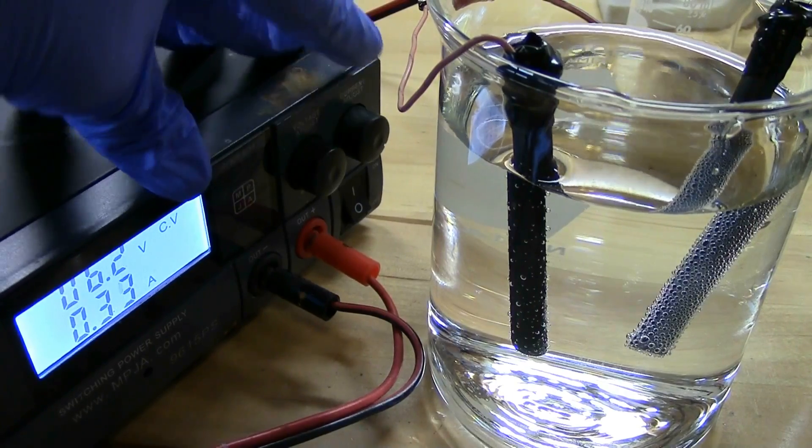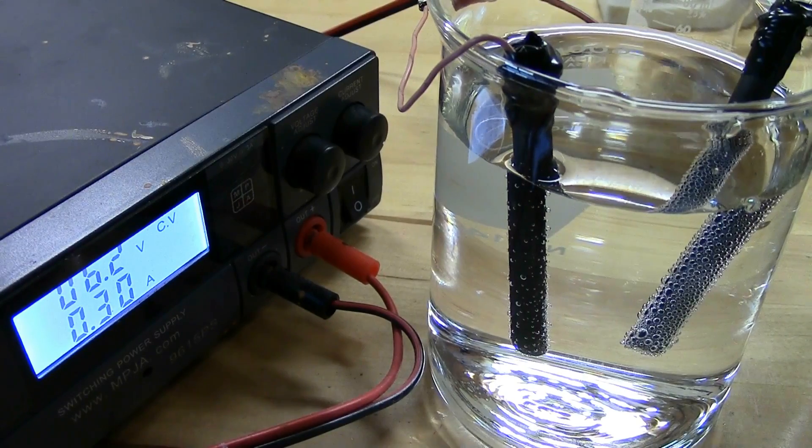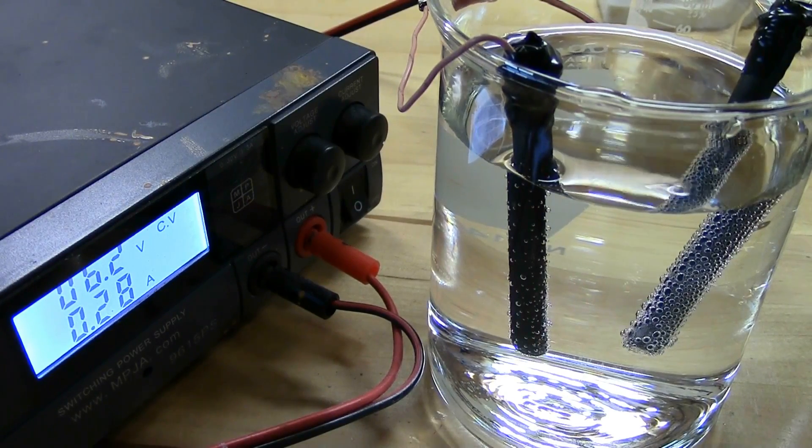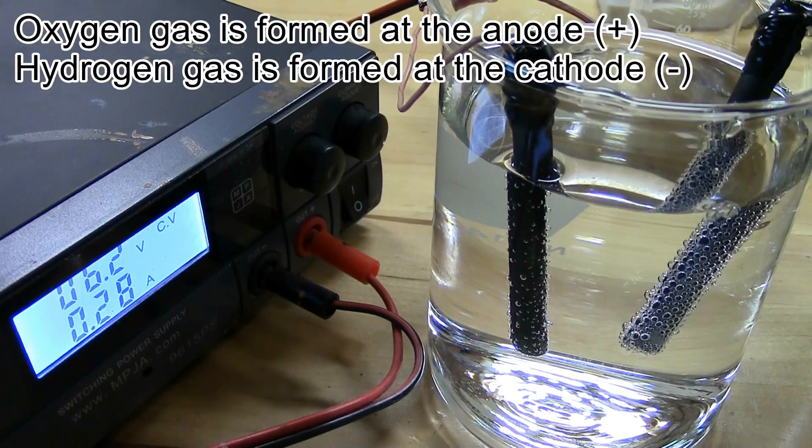Let's go to about 6 volts. I've heard that anything above 6 volts is generally bad for your electrodes, so we'll leave it at that. But you can see we're generating bubbles. We've got a reaction happening, and that's great.